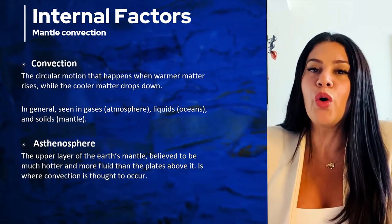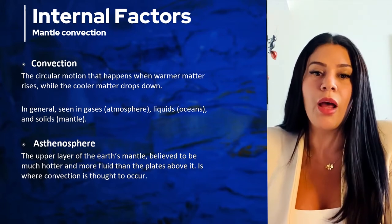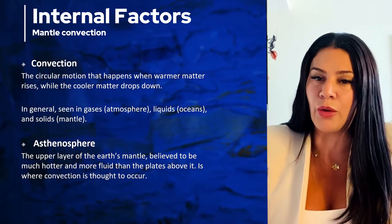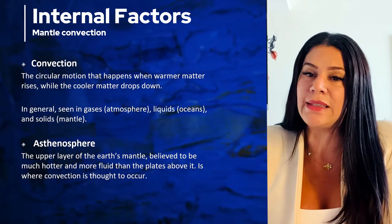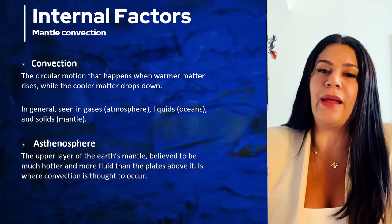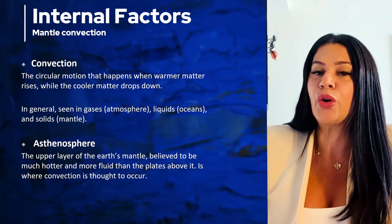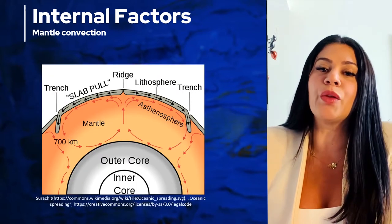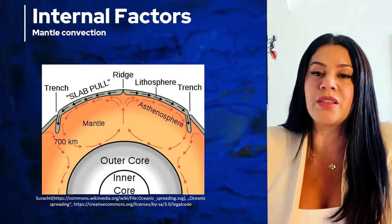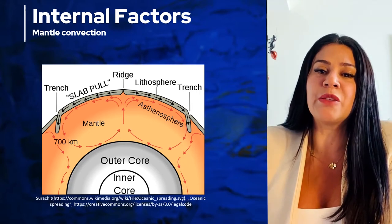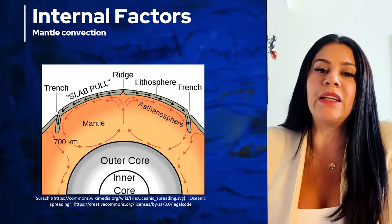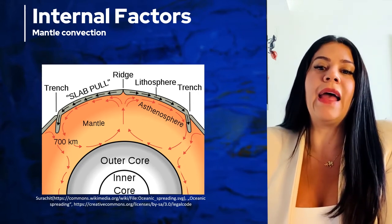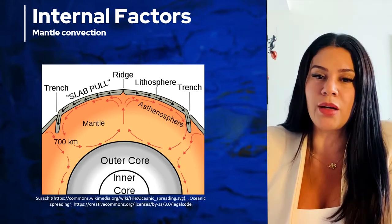What causes the ocean floors to spread? The answer is convection. Convection is the circular motion that happens when warmer matter rises while cooler matter drops down. We see convection in gases, liquids, and solids. Convection is thought to occur in the asthenosphere, where the upper layer of the earth's mantle is more fluid than the plates above it. The magma rises up and is stopped by the hard rock crust, so it spreads underneath, dragging the crust and breaking it. Where the crust breaks, magma fills in and is cooled by ocean water, becoming new crust.